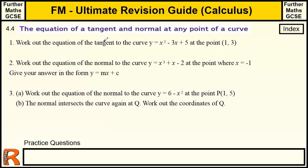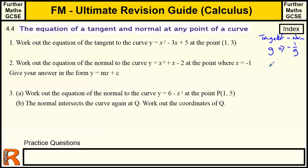The connection between the tangent and the normal is that if the tangent has a gradient of G, then the normal's gradient is minus 1 divided by G. So if G is 2, for example, then the normal gradient is minus 1 over 2.